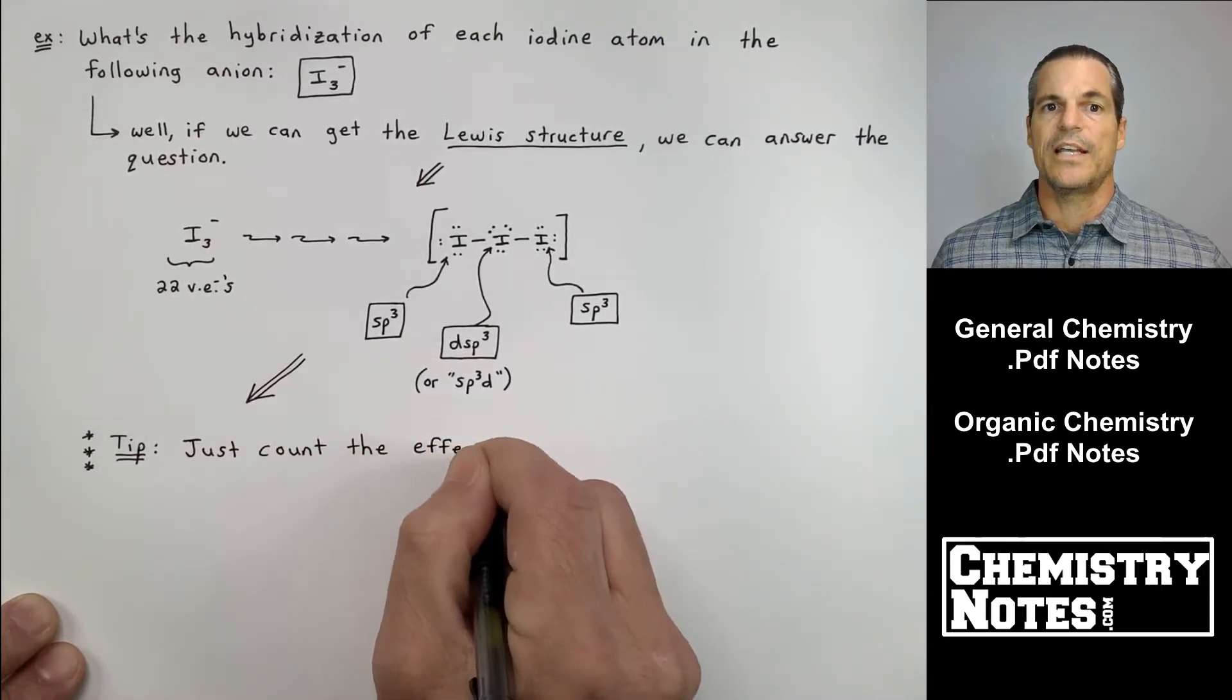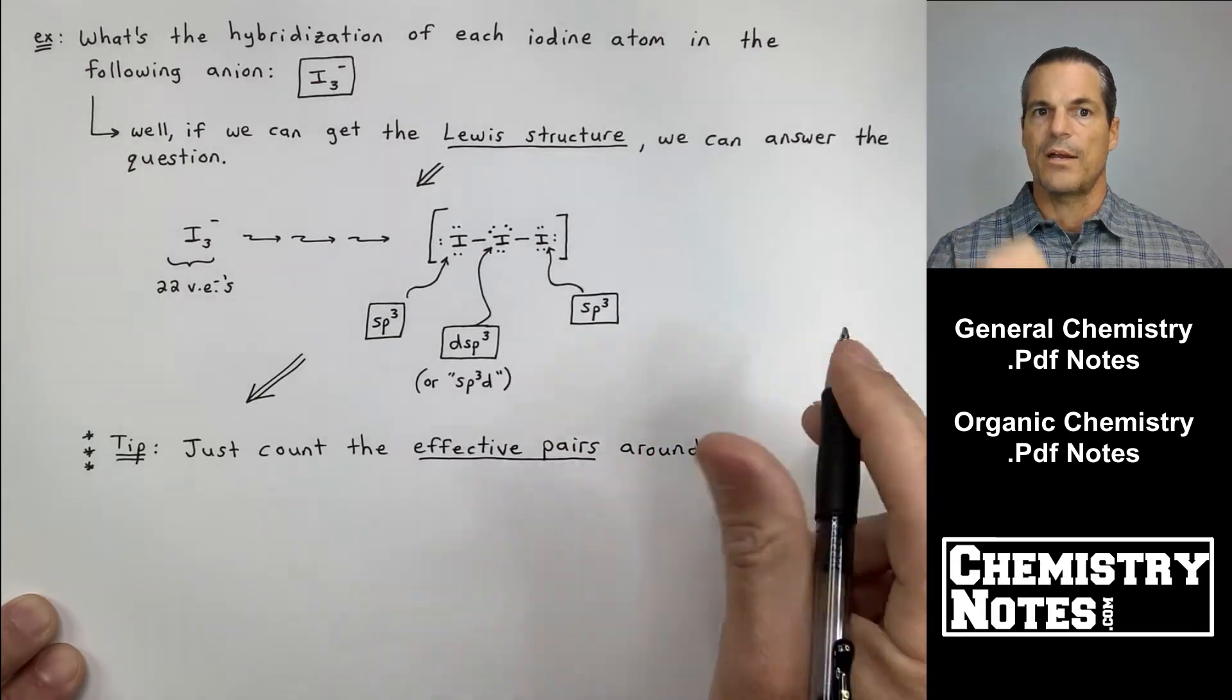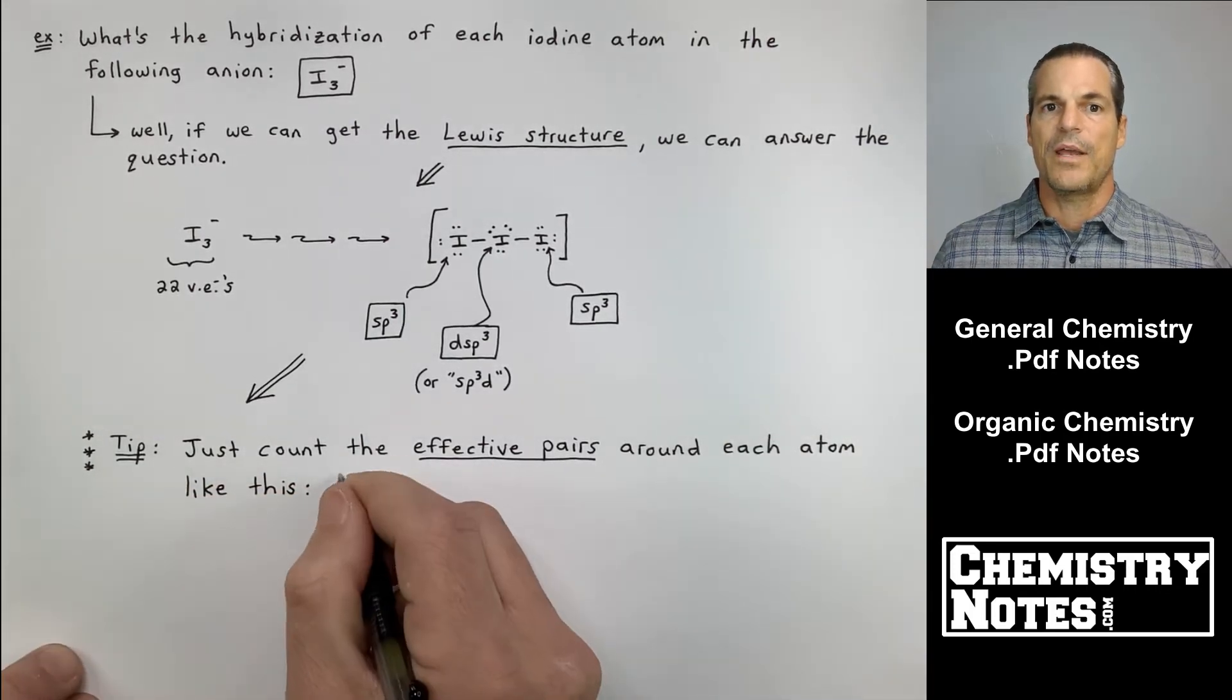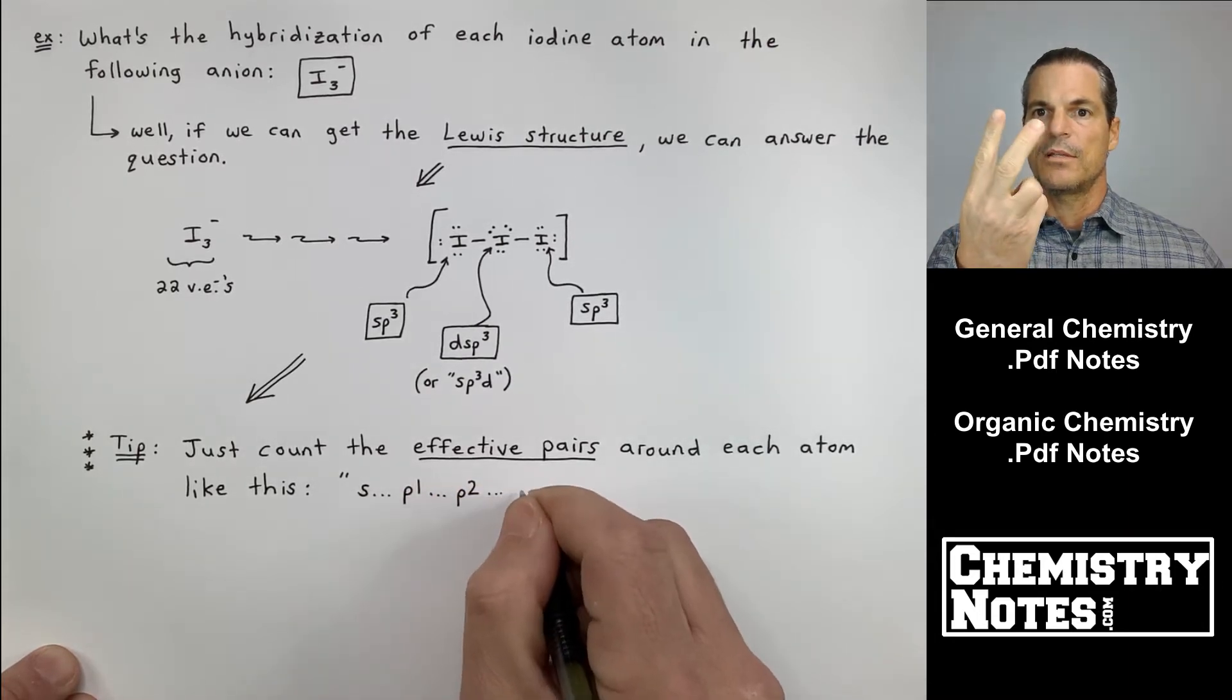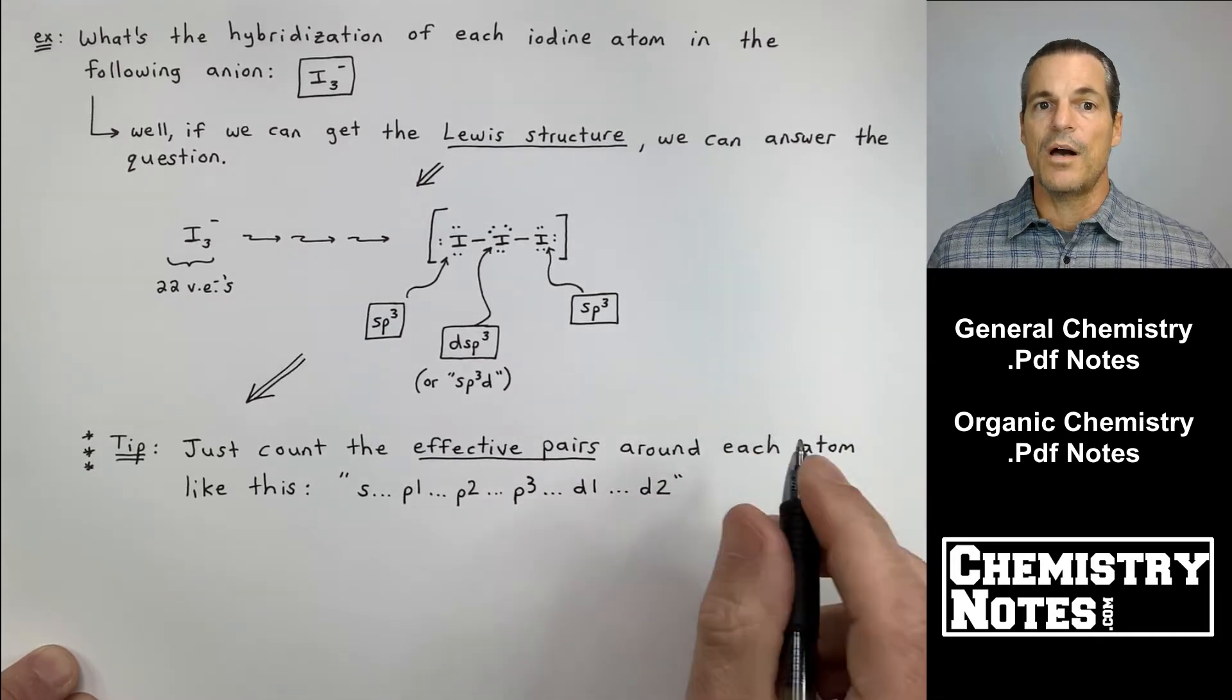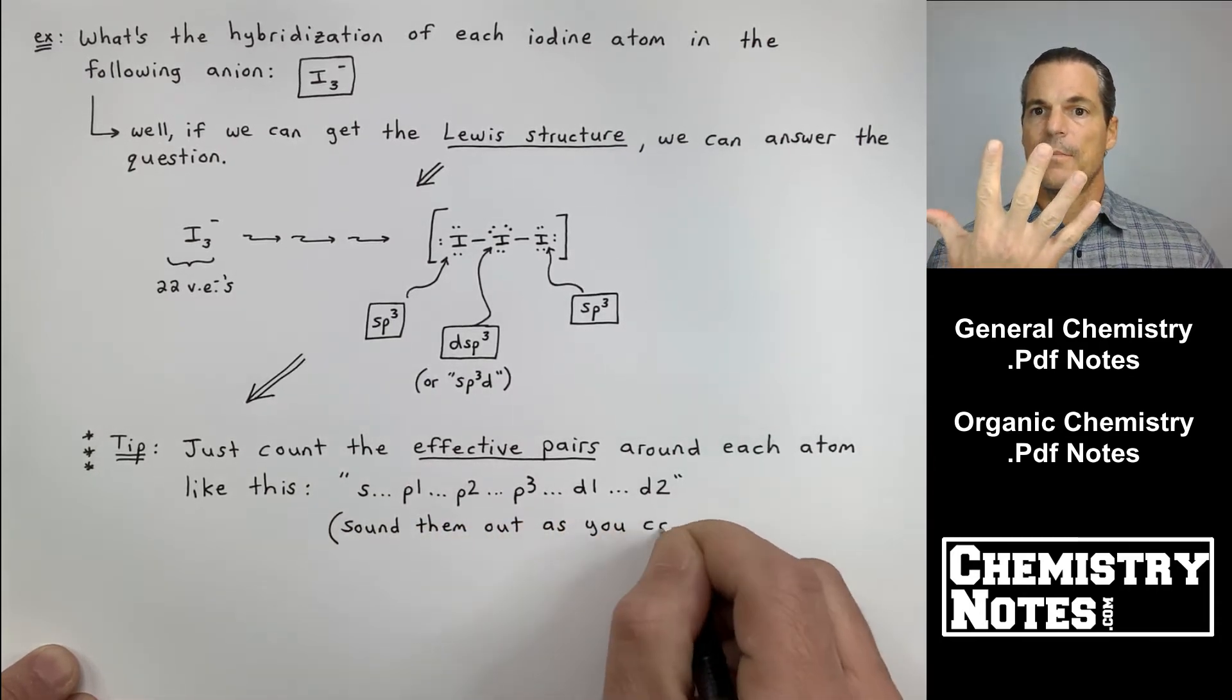Now, how am I just pointing arrows and coming up with hybridization? Well, look at the iodine on the far left. The iodine on the far left has four effective pairs. It has three lone pairs and a bond. Watch my hands. S, P1, P2, P3. Four effective pairs. The iodine on the far right has four effective pairs. It's got a bond and then three lone pairs. That's four effective pairs. Watch my hand. S, P1, P2, P3.